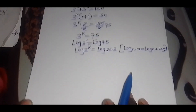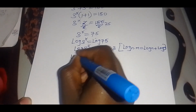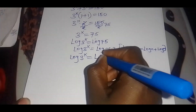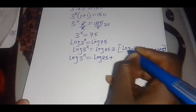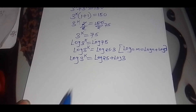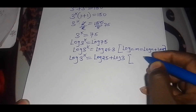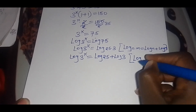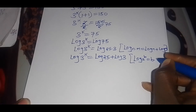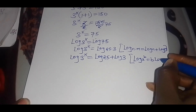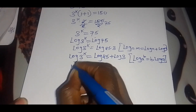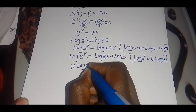So we have log(3 raised to power k) equals log(25) plus log(3). Applying the second identity, which states that log(a raised to power b) can be expressed as b times log(a), we apply this identity so that we have k times log(3) equals log(25) plus log(3).